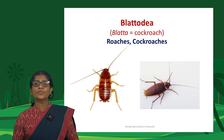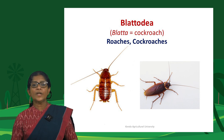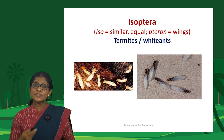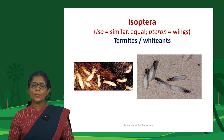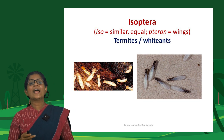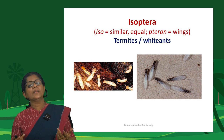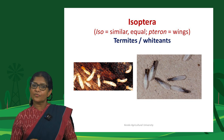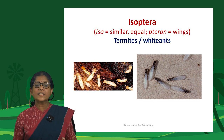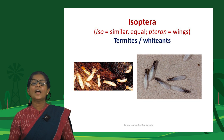Isoptera are termites, also referred to as white ants though they are not real ants. 'Iso' means similar or identical, and 'ptera' means wings — their fore and hindwings are similar in size and venation. Mantodea are mantids, also called praying mantids — both spellings apply, as their forelegs held together resemble a prayer posture, and they are also called soothsayers.